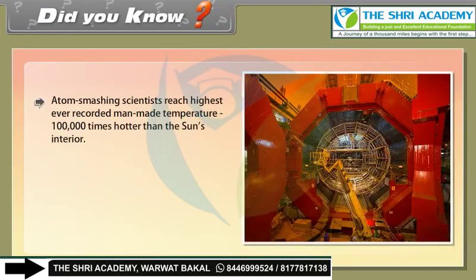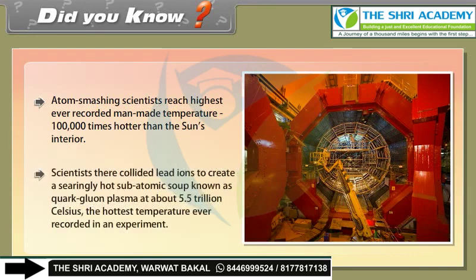Did you know? Atom-smashing scientists reached the highest ever recorded man-made temperature — one lakh times hotter than the sun's interior. Scientists collided lead ions to create a searingly hot subatomic soup known as quark-gluon plasma at about 5.5 trillion degrees Celsius — the hottest temperature ever recorded in an experiment.